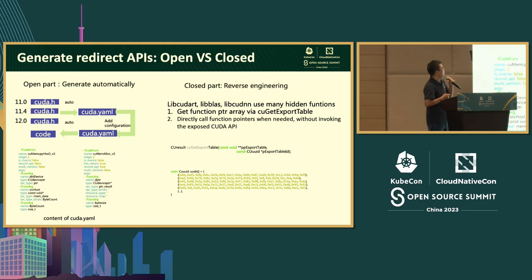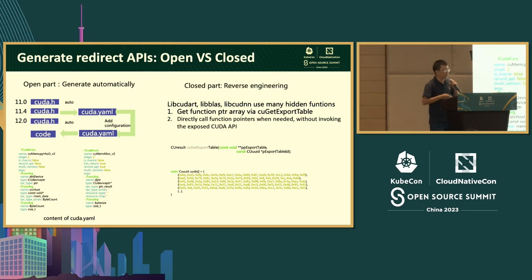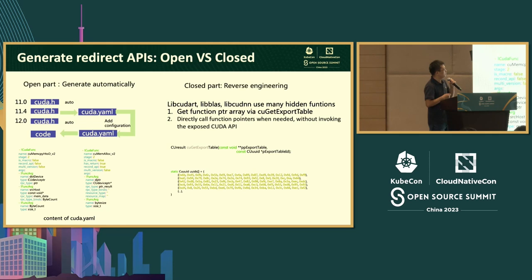Considering all factors, we chose to intercept at the Driver layer to minimize impact on the application. We split APIs into open and closed parts. For the open part, all documentation is in cuda.h — we parse cuda.h to generate a YAML file with API metadata. Simple APIs like cuInit can have RPC code auto-generated directly. For complex APIs involving memory transfer and copy, we add configuration to the YAML. After configuration, software can auto-generate the code. We estimate about 80-90% of APIs can be auto-generated.